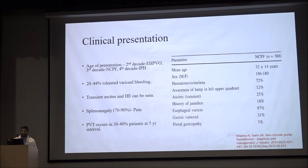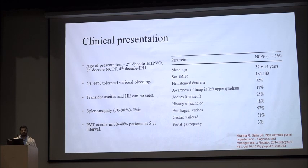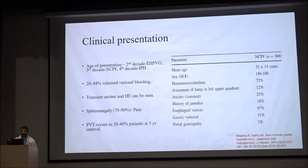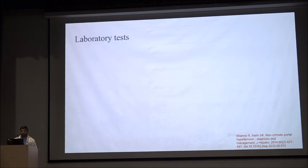Regarding clinical presentation, the age differs between patient groups: EHPBO presents in the second decade, NCPF in the third decade, and IPH in the Japanese group in the fourth decade. Twenty to 44% have well-tolerated variceal bleeding. Transient ascites and hepatic encephalopathy can be seen but resolve in up to 25% of patients. Splenomegaly is seen in 70–90% of patients, and pain occurs due to perisplenitis or splenic infarction. Portal vein thrombosis develops in 30–40% of patients.